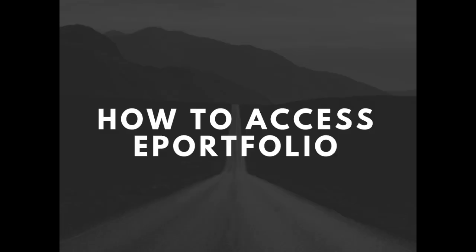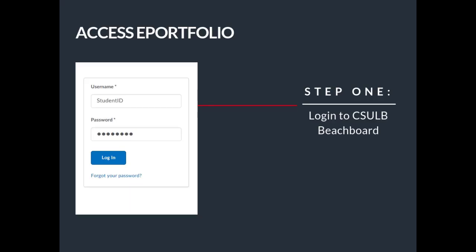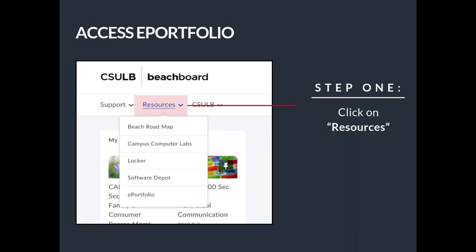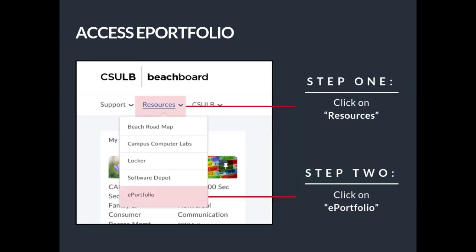Now that we learned about the benefits, let's talk about how to access your ePortfolio. To access it, begin by logging into your BeachBoard account. Then click on the Resources tab. From there, you will use the drop-down menu to click on ePortfolio, and this will take you to the homepage.